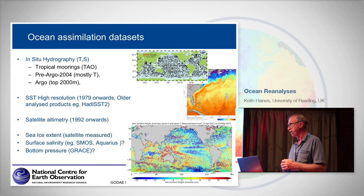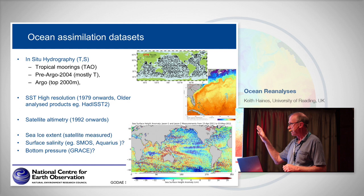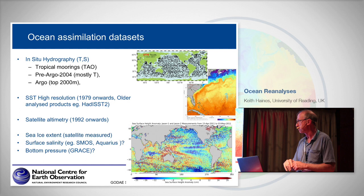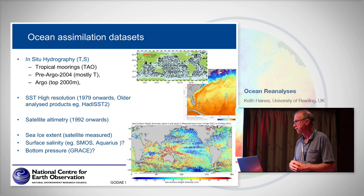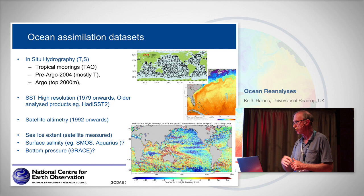The older data, in particular, is dominated by temperature data and tends to be much shallower than the two kilometres from Argo. Except for research vessels, a lot of the temperature data is XBT data — much shallower. The quality of those data sets is variable. There's a big international program, the IQUAM program, trying to look back over the history of in-situ data to quality control some of the older data. If you want to get a consistent history, you need to do that.